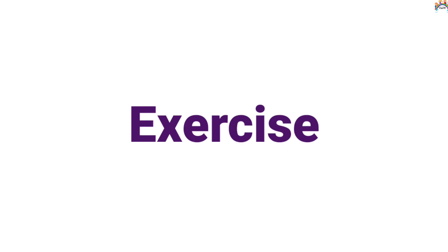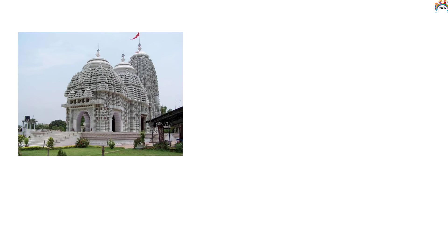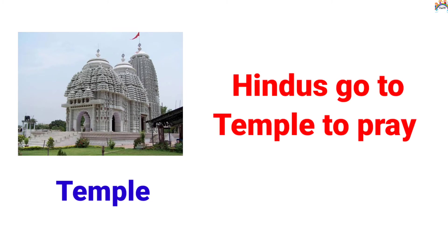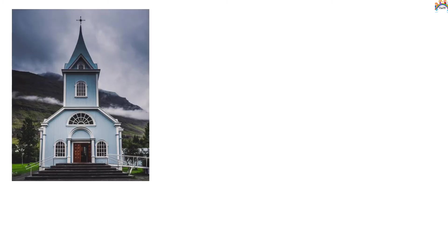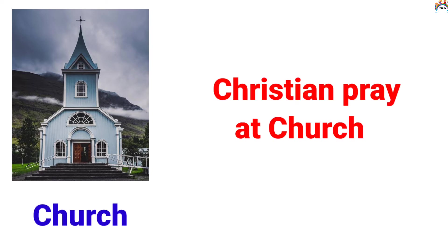Exercise. Now we practice some exercises on this topic. Identify the picture, children, and tell me the place of worship. Yes, this is a temple, and Hindus go to the temple to pray. Identify the next picture and tell me the place of worship. Yes, very good — this is a church, and Christians pray at church.